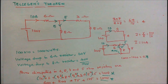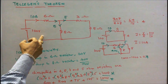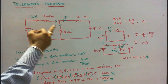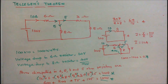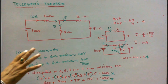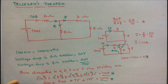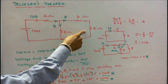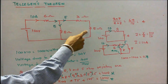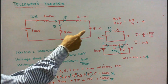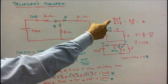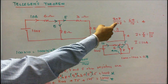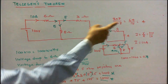Now we'll work out one problem on Tilligan's theorem. This is a given circuit with 100 volts and 4 resistors: 6 ohm, 8 ohm, 3 ohm and 5 ohm. First step, we have to find the total resistance. These two resistors are in series, therefore 3 plus 5 is equal to 8. The 8 ohm resistor is in parallel with this another 8 ohm resistor, therefore 8 into 8 divided by 8 plus 8, that is 64 by 16, equal to 4 ohms.